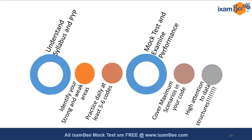There are some important pillars to take care of: understand the syllabus and previous year paper questions; identify your weak and strong areas — this is very important in the prelim specifically because there are nine subjects with marks allocated against them, so you need to reduce weak areas and strengthen your strong subjects. Practice at least five to six words daily for the mains examination. Examine your mocks — not just giving them, but analyzing your performance. Try to cover maximum scenarios in your code so that test cases will pass. Pay high attention to data structures, as it will be a vital element in your prelim.